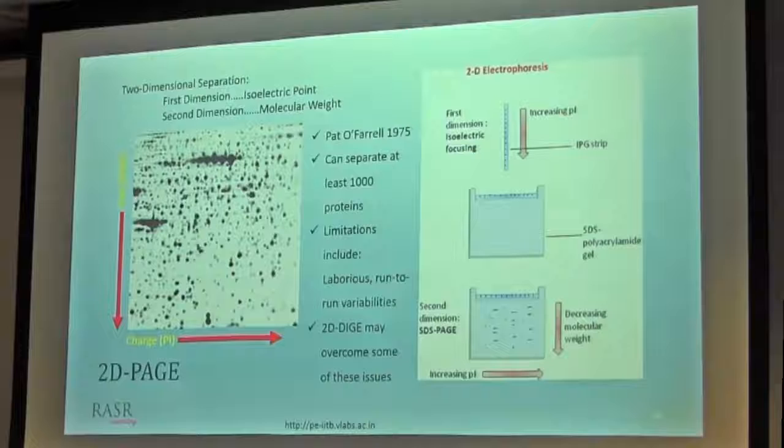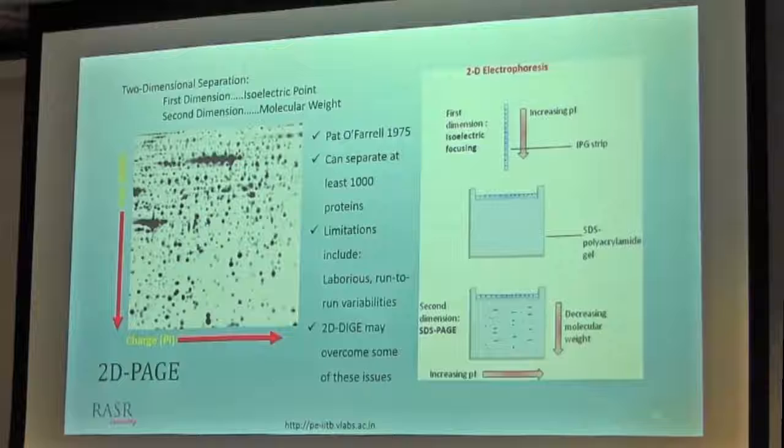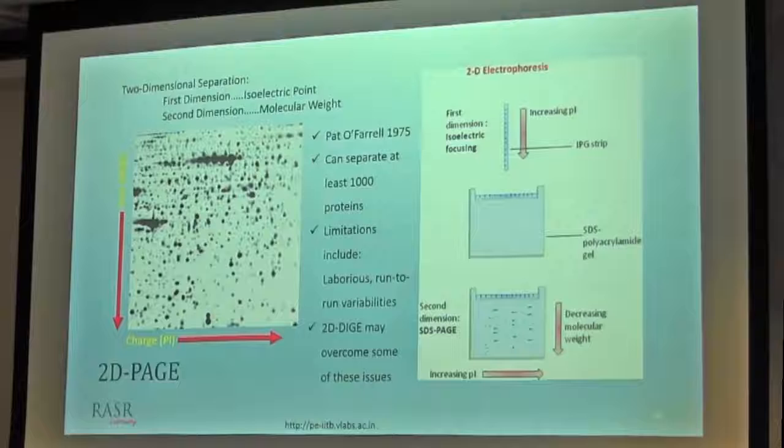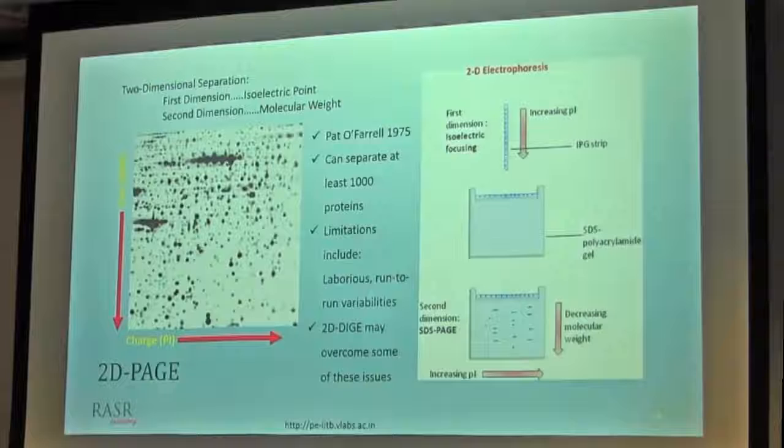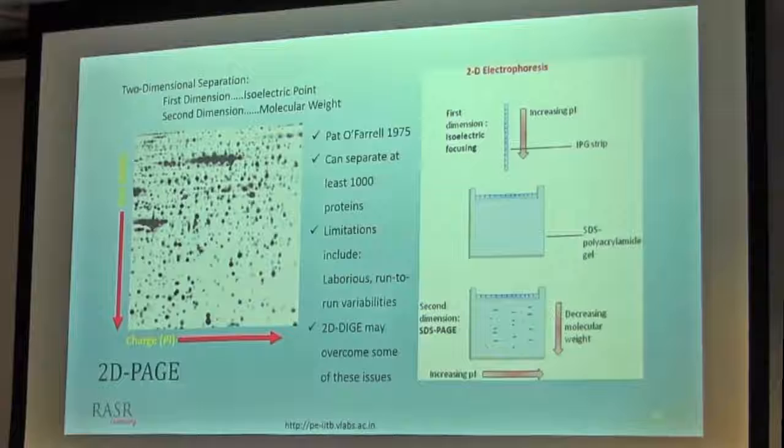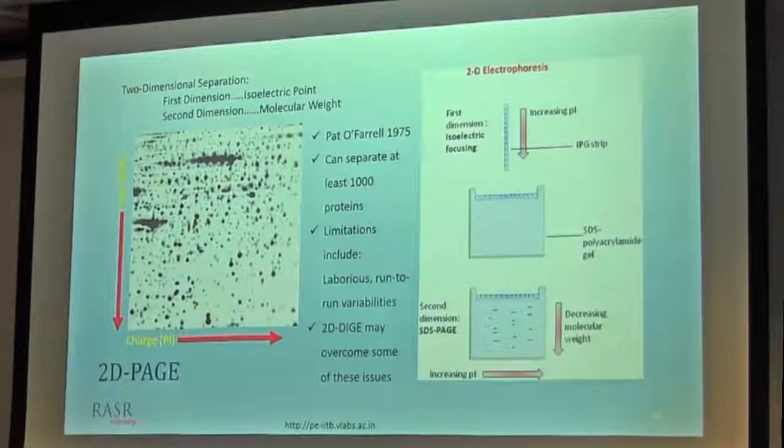However, some limitations exist. Each sample you have to process separately, analyze separately. Now there are two dimensions, so you have to do more work, plus there is so much variation. More handling, more variation, plus run-to-run variability exists. Then DIGE popped up, which is differential gel electrophoresis.